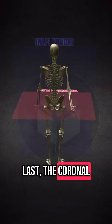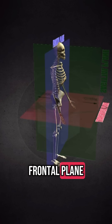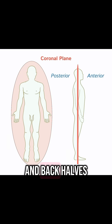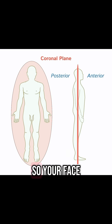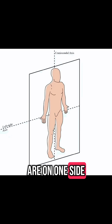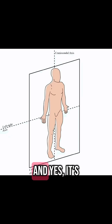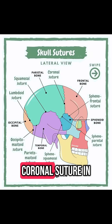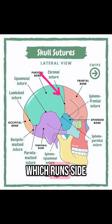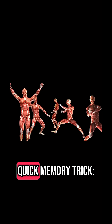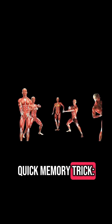Last, the coronal plane, also called the frontal plane. It divides the body into front and back halves — so your face, chest, and knees are on one side, your back and heels on the other. And yes, it's named after the coronal suture in the skull, which runs side to side, just like this plane does.